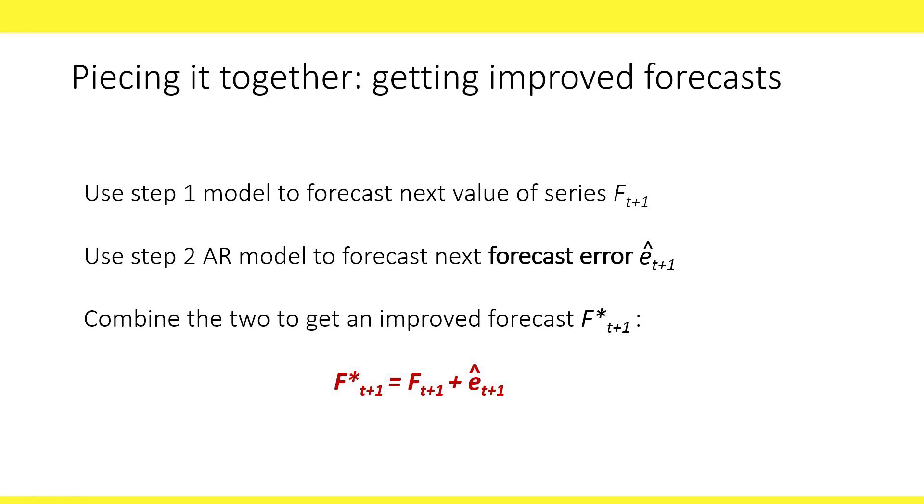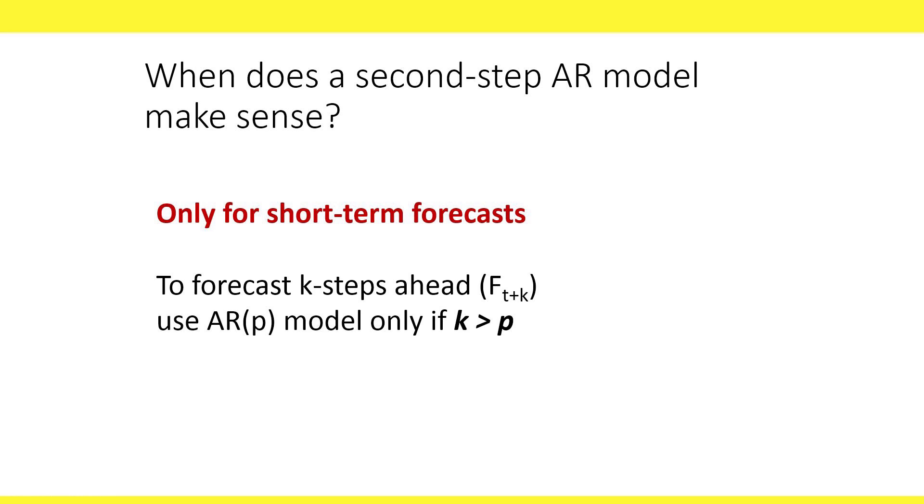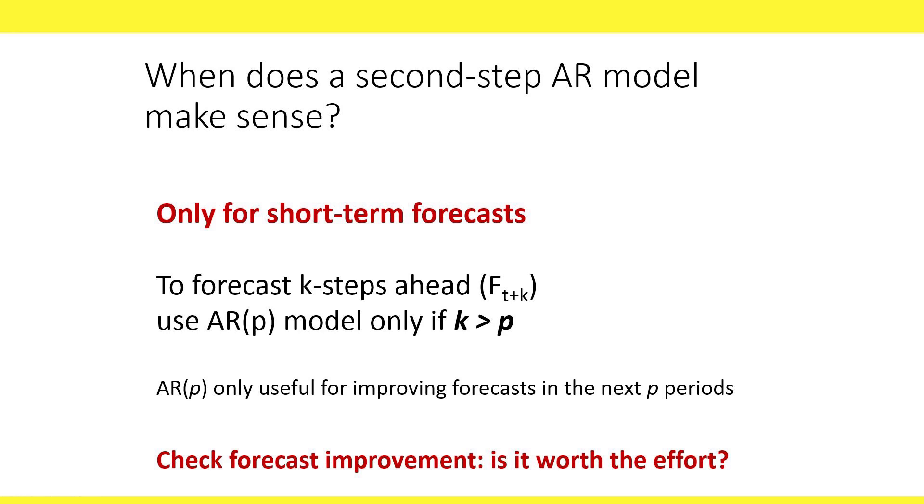An AR model is sometimes helpful and sometimes not. Specifically, an AR model is useful for improving short-term forecasts. To forecast k steps ahead, we'll use an AR(p) model only if k is larger than p. For example, we won't use an AR(1) to forecast three steps ahead because an AR(1) only adjusts the one step ahead forecast. In other words, an AR(p) is only useful for improving forecasts in the next p periods. Even if you're only interested in short-term forecasting, it's not always the case that improvement provided by the second step AR model is practically worthwhile. What if the forecasts of monthly passengers are now more accurate by 10 passengers? So, make sure that the improvement is sufficiently substantial for the application at hand to justify this extra effort and complexity.